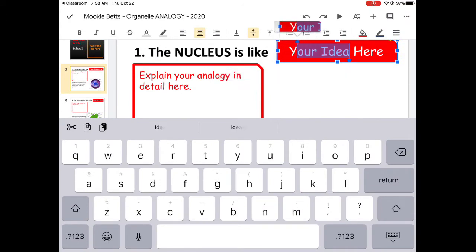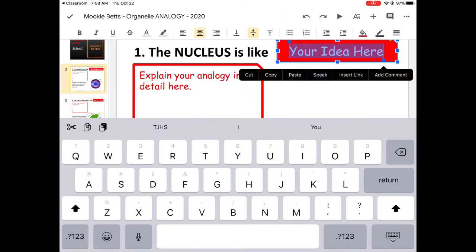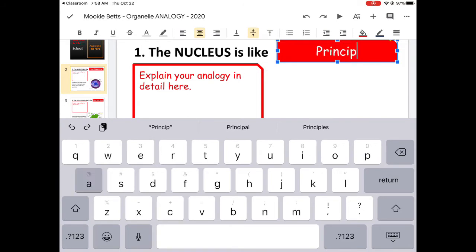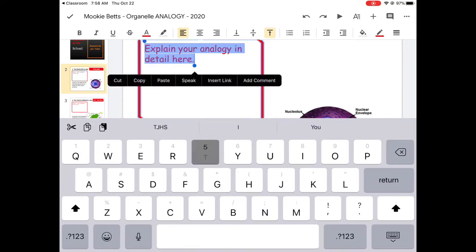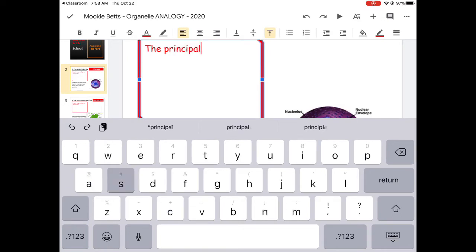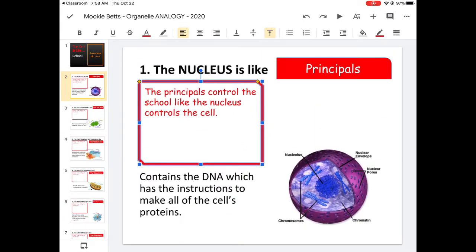So I'm going to think, what controls the school? So it's either the office, a room, or people. So I'm going to say it's the people, the principals. And then I'll describe it. The principals control the school, like the nucleus controls the cell. And then I would need a picture. So that's one point, to pick something and then describe it. The second point is to get a picture of a principal.